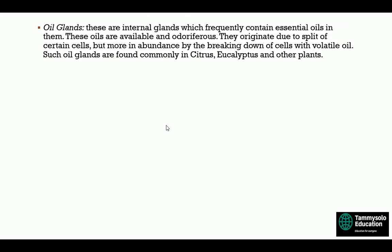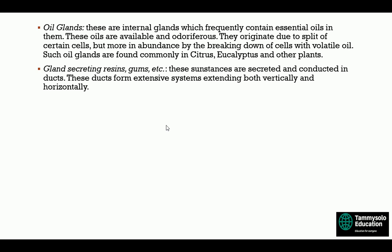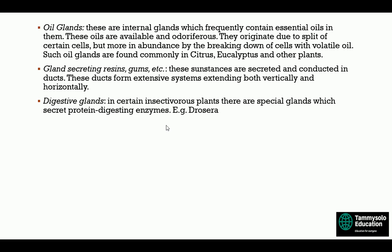Oil glands are internal glands which frequently contain essential oils. These oils are volatile and odoriferous. They originate due to the splitting of certain cells, or more abundantly by the breaking down of cells with volatile oil. Such oil glands are commonly found in citrus, eucalyptus, and other plants. Glands secreting resins and gums: these substances are secreted and conducted in ducts that form extensive systems extending both vertically and horizontally. In certain insectivorous plants, there are special glands which secrete protein-digesting enzymes — for example, those of Drosera — which digest the protein in insects.